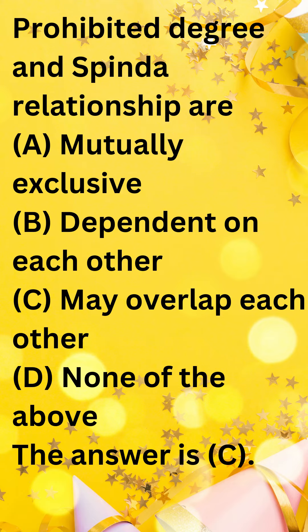It is possible for two people to be in a prohibited degree of relationship even if they are not sapindas. For example, a person cannot marry their step-sibling, even though they are not sapindas.